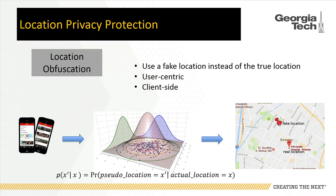When you want to find the nearest restaurant, a fake location is sent to the service provider. The server will return a list of restaurants nearby the fake location. That list will be filtered locally to get the nearest restaurant near your real location. The fake locations are generated randomly, following a probability distribution conditioned on your real location.